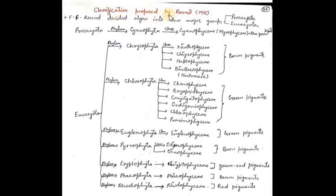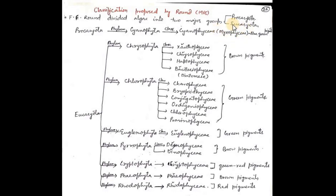Now, the classification of algae proposed by Round in 1965. F.P. Round was an algal phycologist who divided all algae into two major groups: Prokaryota and Eukaryota. Prokaryota means prokaryotic in nature — membrane-bound cell organelles are generally absent. In Prokaryota, they have a single phylum that is Cyanophyta, and Cyanophyta is further placed into one single class — Cyanophyceae — which includes all algae that are prokaryotic in nature, like Nostoc and Anabaena.